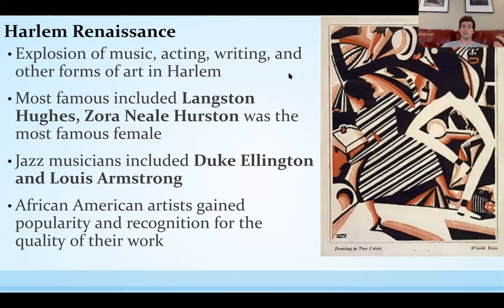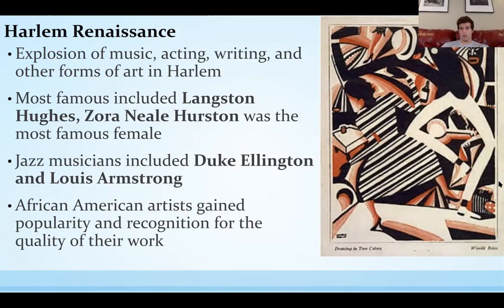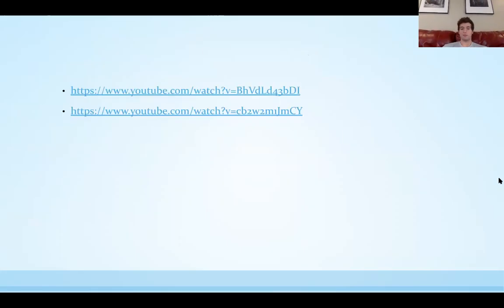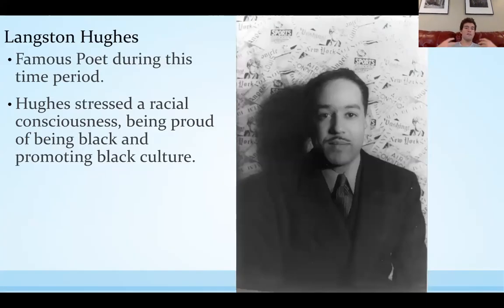Some of the most famous individuals include Langston Hughes, Zora Neale Hurston — a famous female member of the Harlem Renaissance — and jazz musicians like Duke Ellington and Louis Armstrong. For really the first time in all of American history, African American artists gained popularity and recognition for the quality of their work. Especially in the North, white people would go to see them perform, and it was a huge thing at the time. Langston Hughes was a very famous poet who was really into talking about understanding a racial consciousness, being proud of being Black, and really just promoting Black culture.